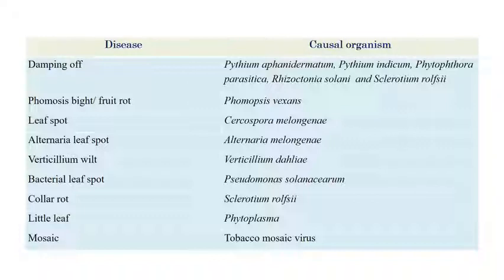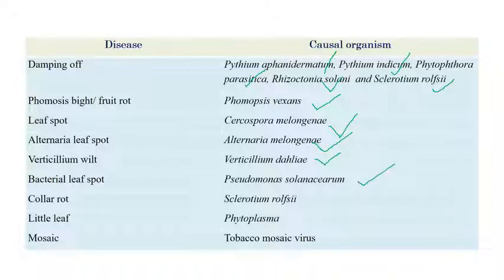Here is the list of important diseases in Brinjal. The first is damping off, caused by Pythium aphanidermatum, Pythium indicum, Phytophthora parasitica, Rhizoctonia solani, and Sclerotium rolfsii. Second is Phomopsis blight or fruit rot, caused by Phomopsis vexans. Third is leaf spot, caused by Cercospora melongenae. Fourth is Alternaria leaf blight, caused by Alternaria melongenae. Fifth is Verticillium wilt, caused by Verticillium dahliae. Sixth is bacterial leaf spot, caused by Pseudomonas solanacearum — from damping off to Verticillium wilt these are all fungal diseases. Seventh is collar rot, also a fungal disease caused by Sclerotium rolfsii. Eighth is little leaf, caused by phytoplasma. And the last is mosaic, a viral disease caused by Tobacco Mosaic Virus. Now we will see each disease in detail.